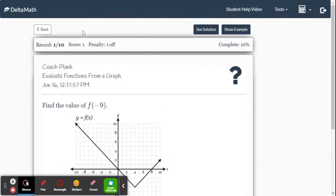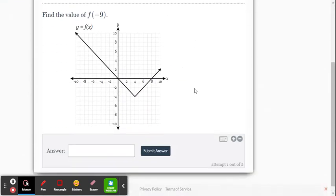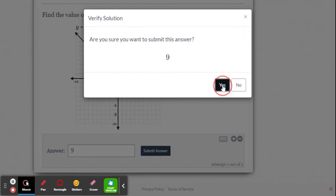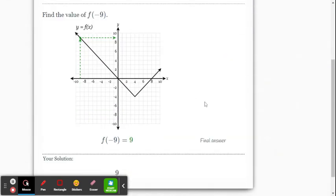Let's do another one. Okay, find the value of f of negative 9. So that means x is negative 9. So go all the way over to negative 9 for x. Where's the y value? The y value is at positive 9. So I'm going to plug in 9. And there you go. And there's the visual again how we found that.